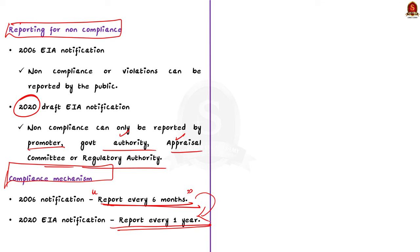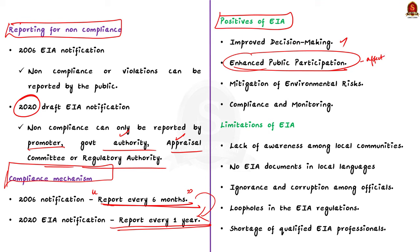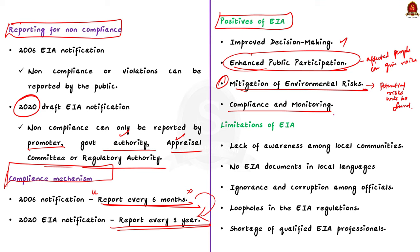You can mention all these points to address the first part of your answer. Now for the second part, let us look at the positives of EIA. First, EIA has led to better-informed decisions regarding development projects by evaluating potential environmental impacts beforehand, helping to ensure sustainable development. Second, EIA has led to enhanced public participation, helping affected communities, stakeholders, and NGOs to voice their concerns and suggestions, promoting transparency and accountability. Third, EIA has helped in the mitigation of environmental risks by identifying potential risks, minimizing adverse impacts such as pollution, destruction of habitat, and resource depletion. Finally, EIA has ensured compliance — guidelines necessitate post-clearance monitoring, ensuring adherence to stipulated conditions and ongoing compliance.